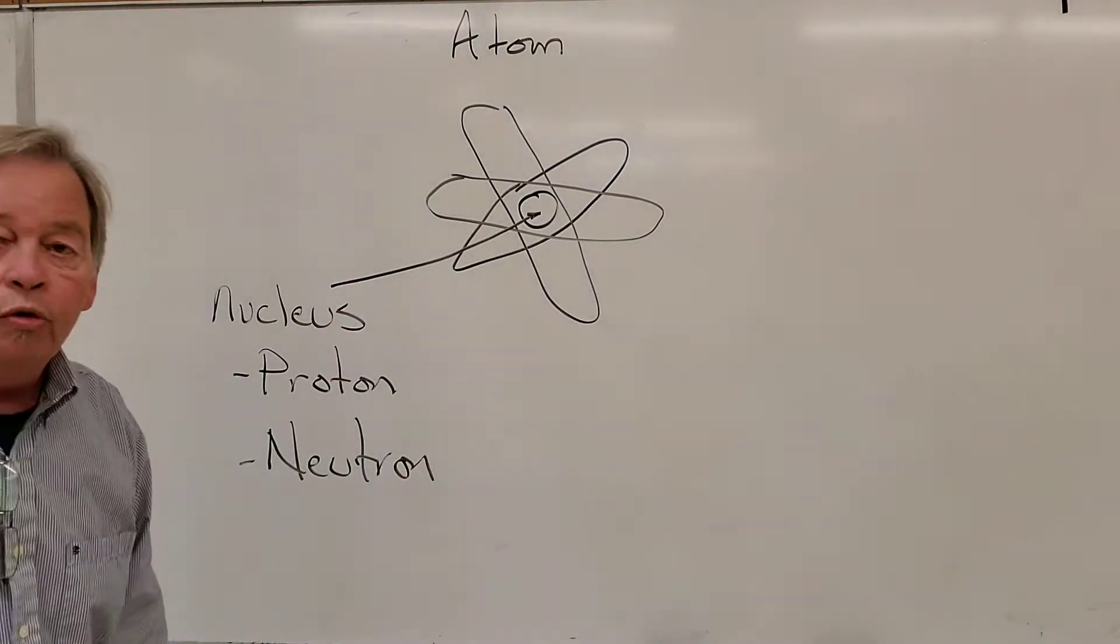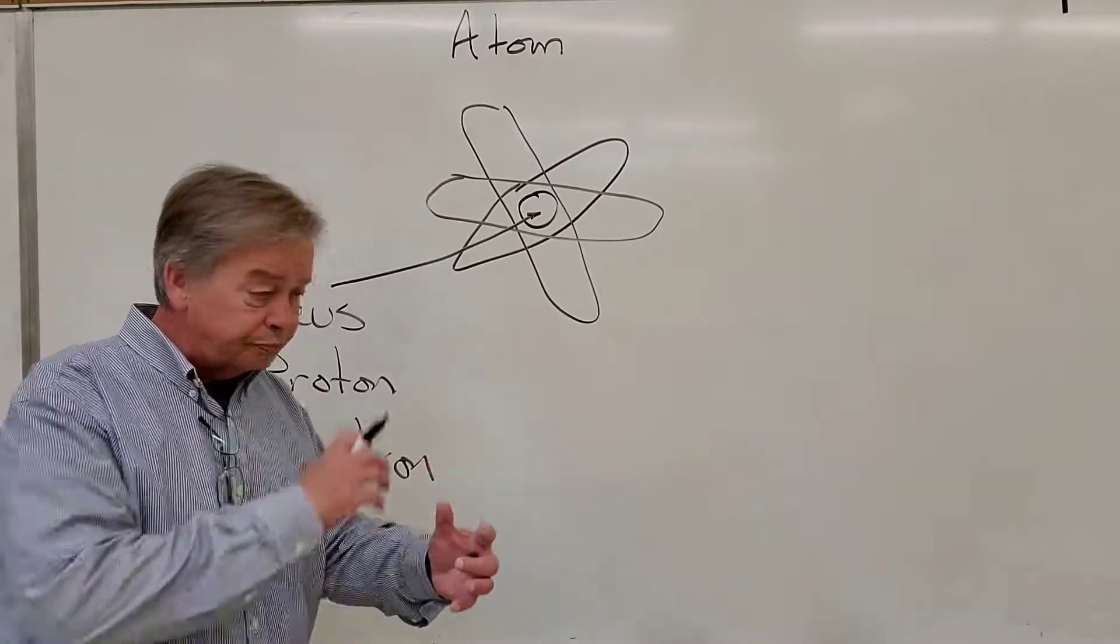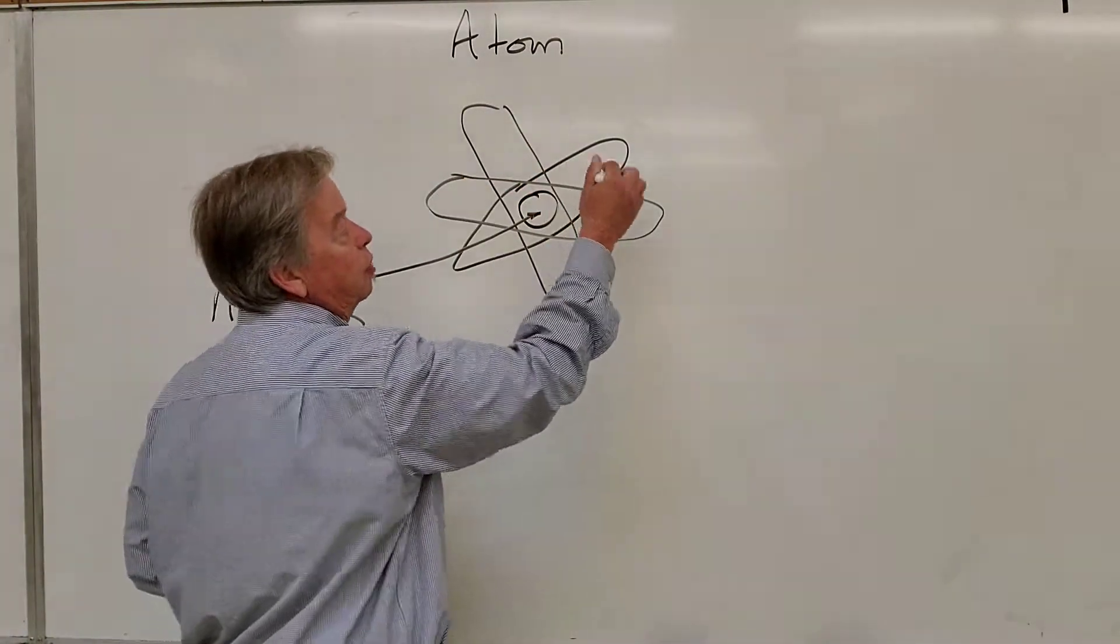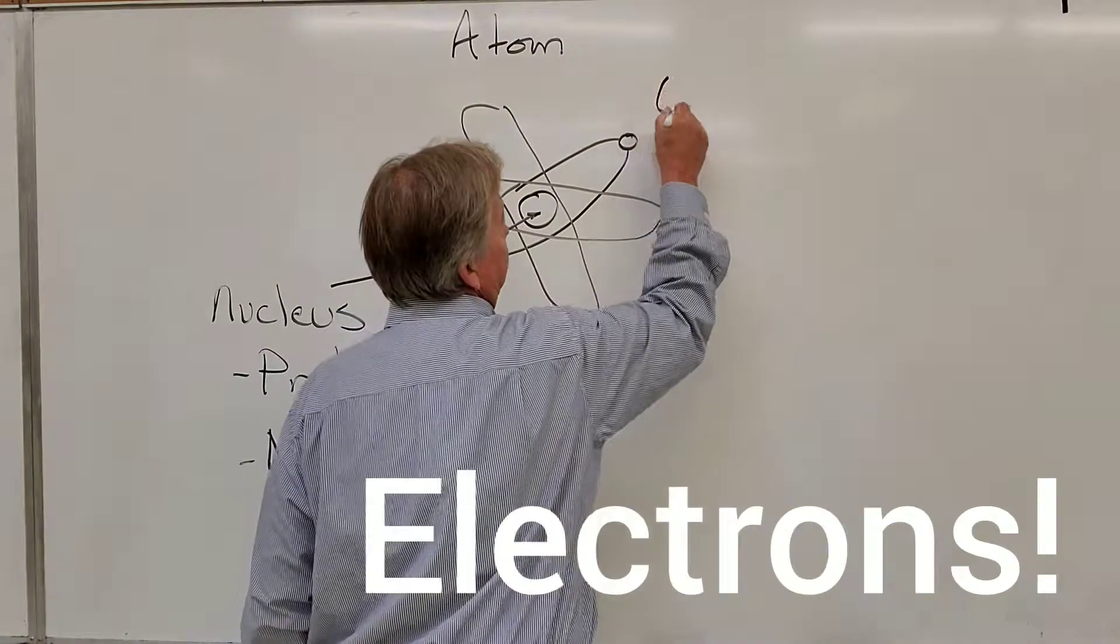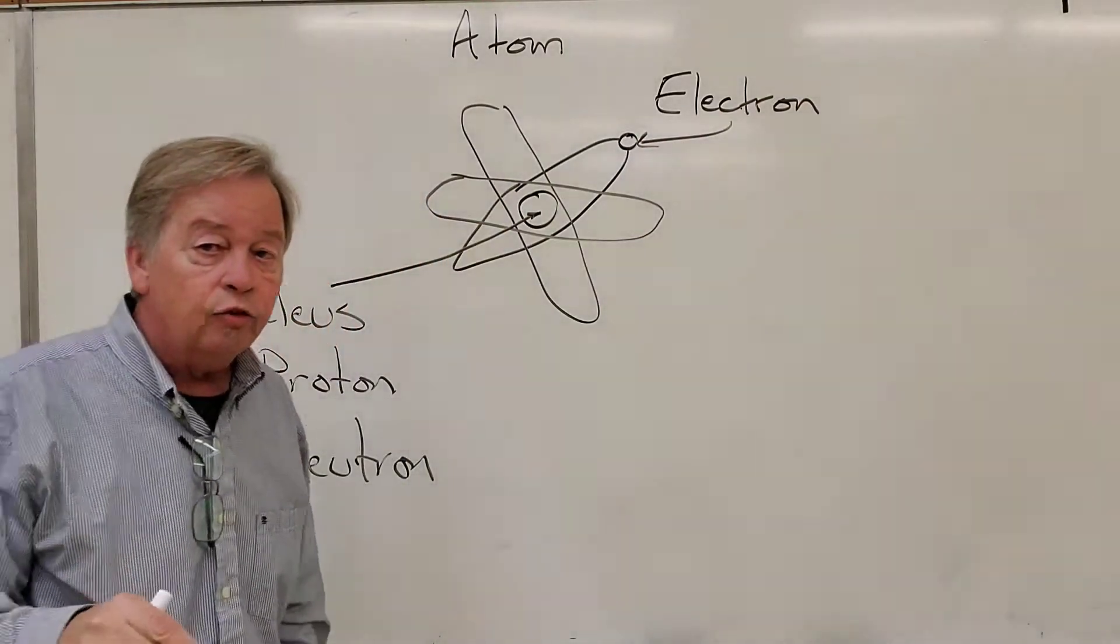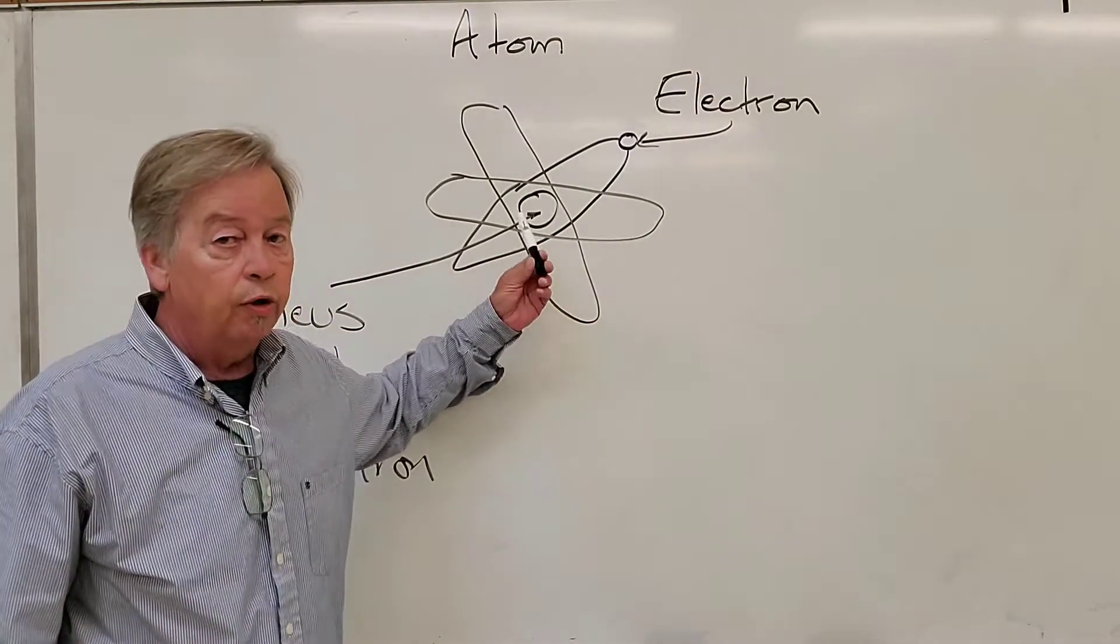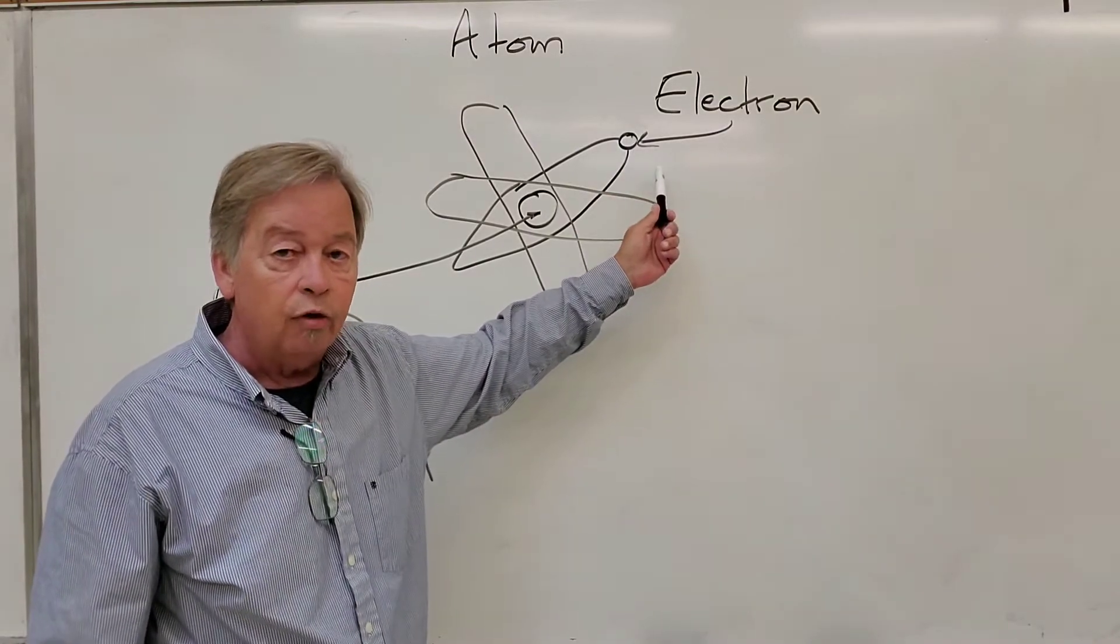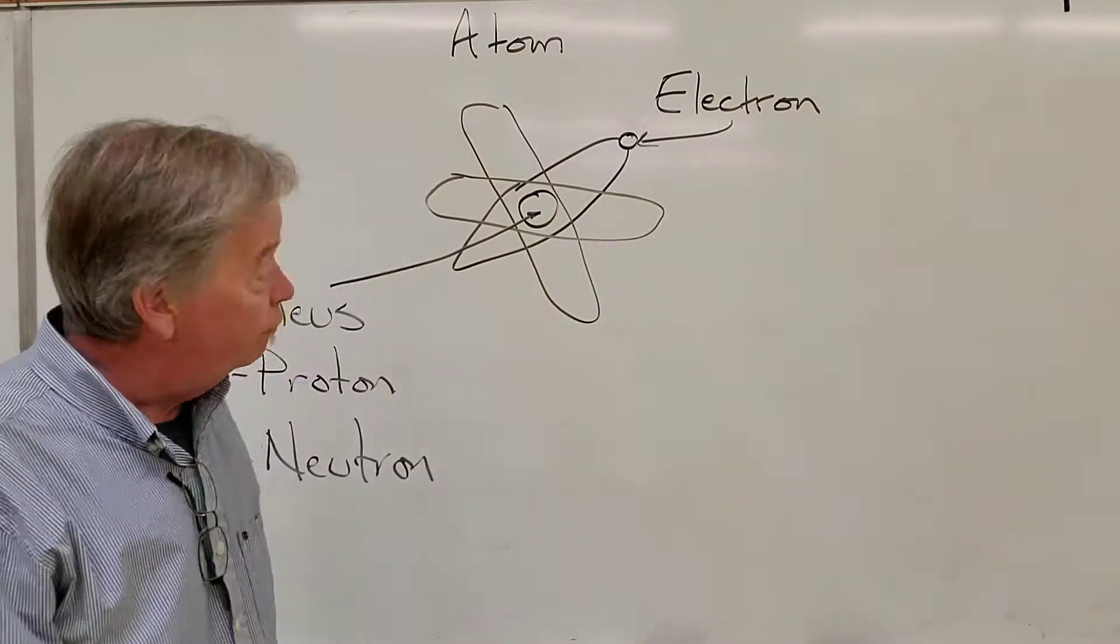So, in the nucleus, we've got the proton and the neutron and then orbiting. Now, this is a key concept you have to understand. Orbiting, like the planets around the sun or the moon around the earth. Orbiting around this nucleus is our third subatomic particle called the electron.